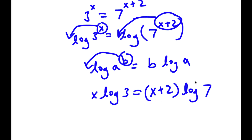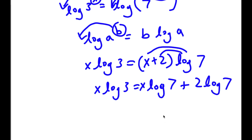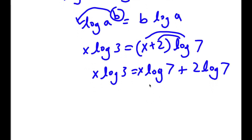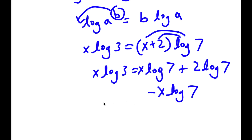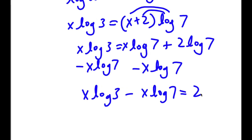Now I can distribute log 7. So x times log 3 is equal to x times log 7 plus 2 times log 7. Now I can subtract x times log 7 on both sides, giving me x times log 3 minus x times log 7 is equal to 2 times log 7.